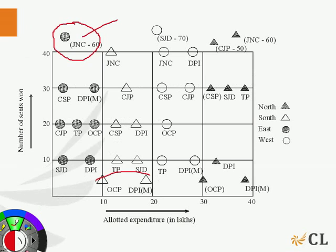We clearly see that in the region south, in the region west, in the region north, OCP has been allotted an expenditure that is less than BPIM and in the region east, the expenditure allotted is almost the same.